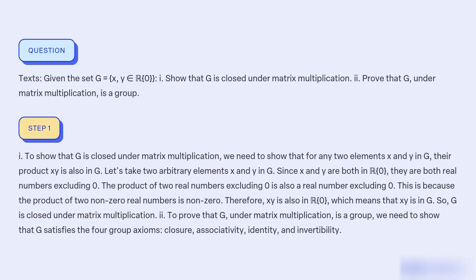To show that G is closed under matrix multiplication, we need to show that for any two elements X and Y in G, their product XY is also in G. Let's take two arbitrary elements X and Y in G. Since X and Y are both in R(0), they are both real numbers excluding zero. The product of two real numbers excluding zero is also a real number excluding zero.